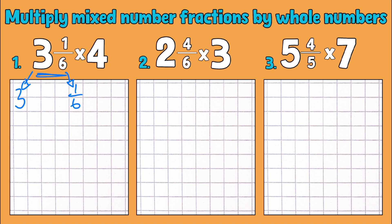And what we're going to do with each of these examples is partition our mixed number into its whole number and its fraction, multiply both by the whole number that we've got, and then we're going to put them back together at the end.